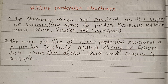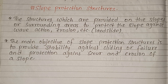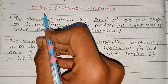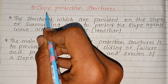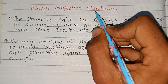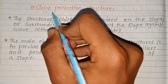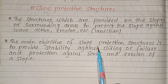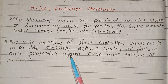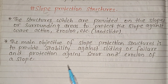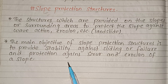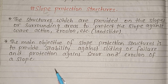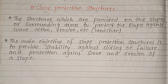Slope protection structures are structures provided on the slope or surrounding area to protect the slope against wave action and erosion. The main objective of slope protection structure is to provide stability against sliding or failure, and protection against scour and erosion of a slope.